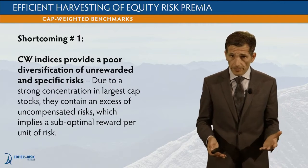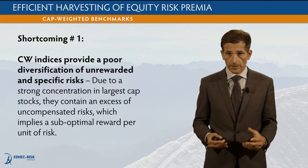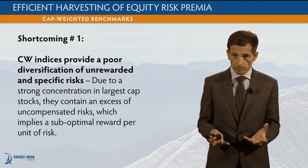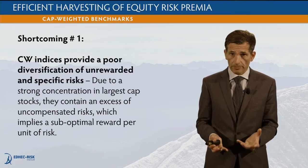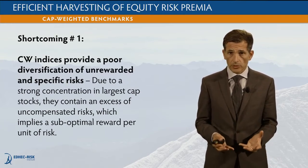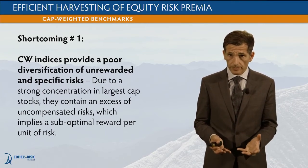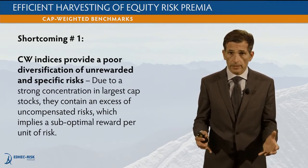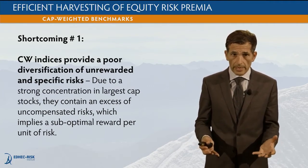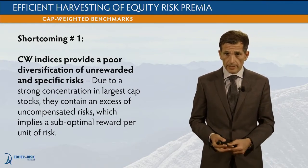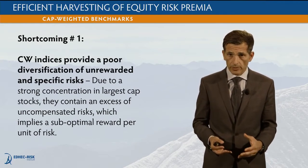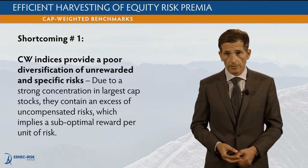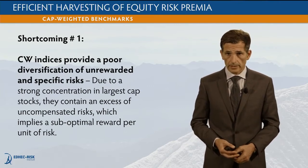The first shortcoming of cap-weighted benchmarks stems from the very nature of the way the indices are constructed, based on weighting proportional to the market cap of the individual stocks. This tends to lead to an excessive concentration — very few stocks, the very largest ones, tend to dominate the rest of the portfolio. As a result, these cap-weighted indices provide poor diversification of unrewarded specific risks. Because they are concentrated portfolios, they contain an excess of uncompensated risks.